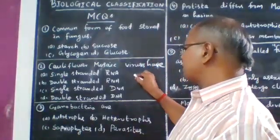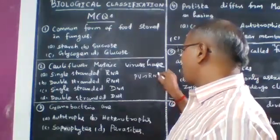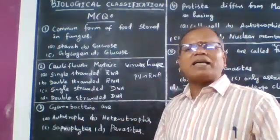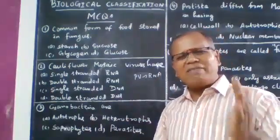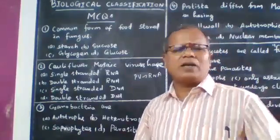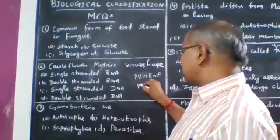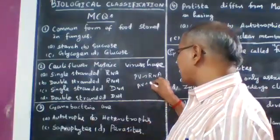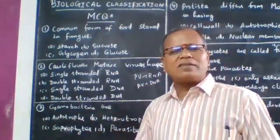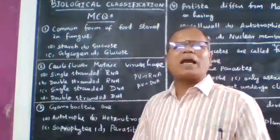Plant viruses always have RNA. RNA acts as the genetic material in plant viruses. In animal viruses, DNA acts as the genetic material.